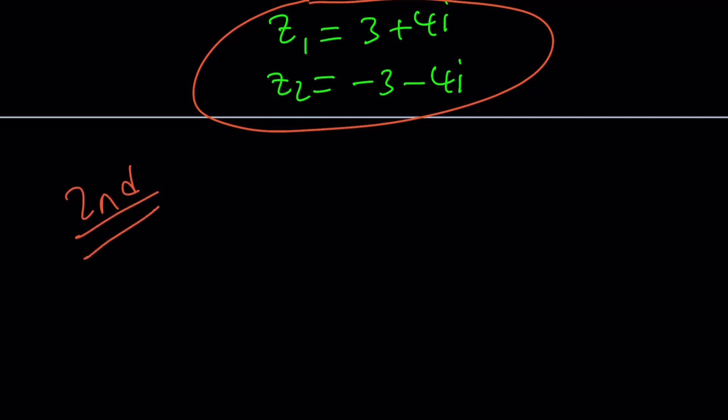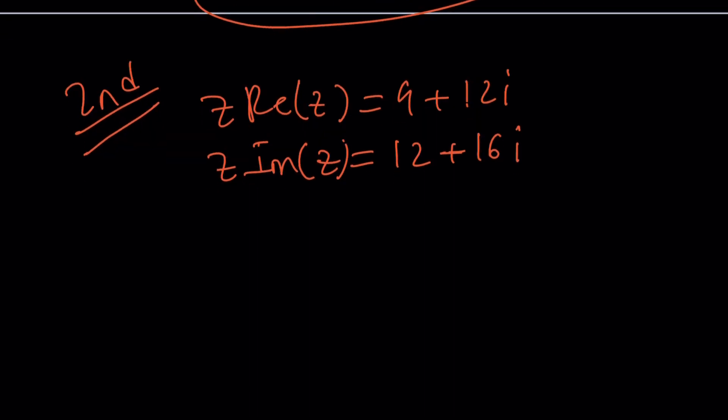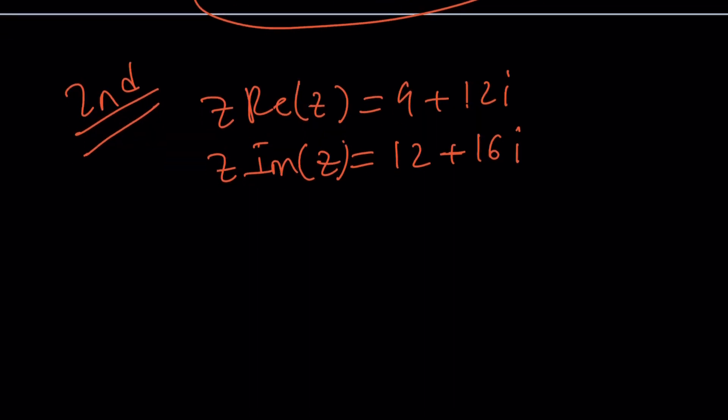Again, our equations are Z times the real part of Z is 9 plus 12i, and Z times the imaginary part of Z is 12 plus 16i. And we're going to solve for Z. So, let's go ahead and take a look. Why can't I just divide these equations?